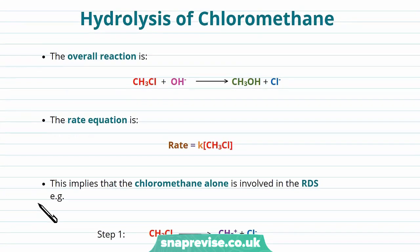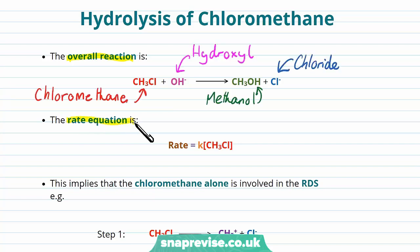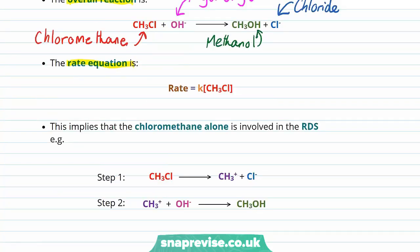Let's look at an example through the hydrolysis of chloromethane. The overall reaction is given here. We've got a molecule of chloromethane plus a hydroxyl ion, and that's going to methanol and a chloride ion. The rate equation for this reaction is given by the rate equals the rate constant times by the concentration of chloromethane. As chloromethane is order one, this implies that the chloromethane alone is involved in the rate determining step. Otherwise we'd have some other things in the rate equation.